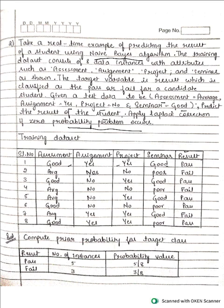You can refer to my previous videos — we have solved many problems on this, and this is just a continuation of the exercise problem. First, consider the target variable, which is result, and find how many pass and fail instances there are in the 8 instances.